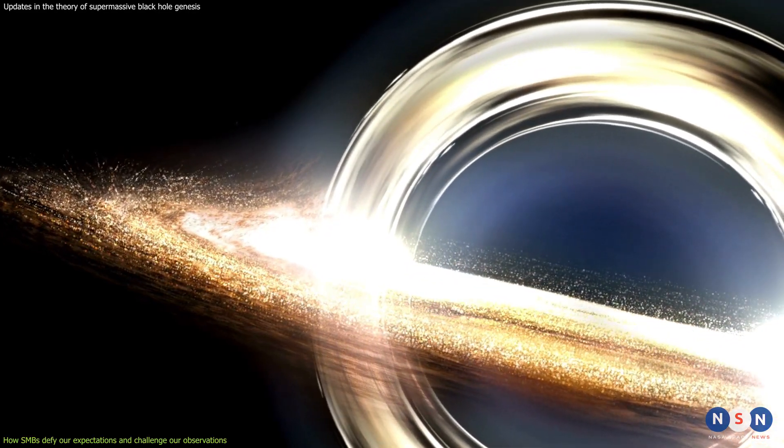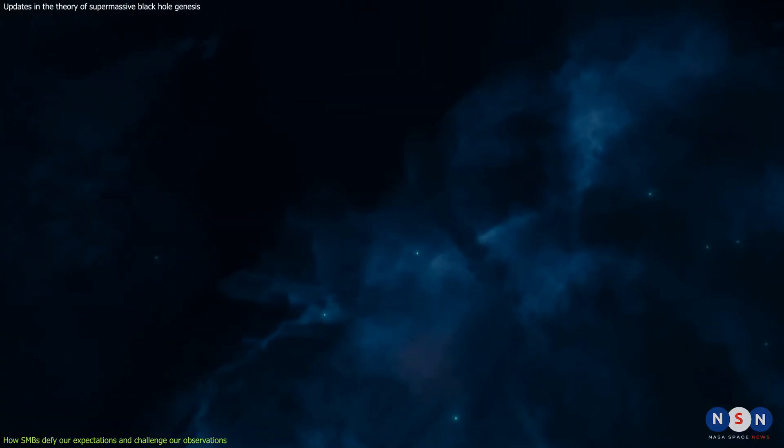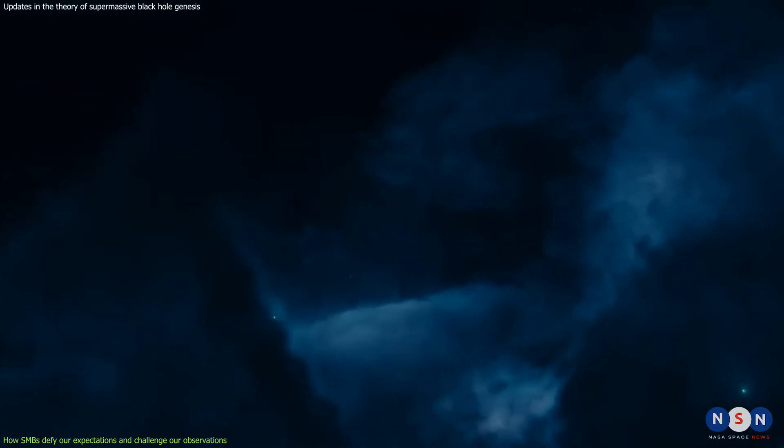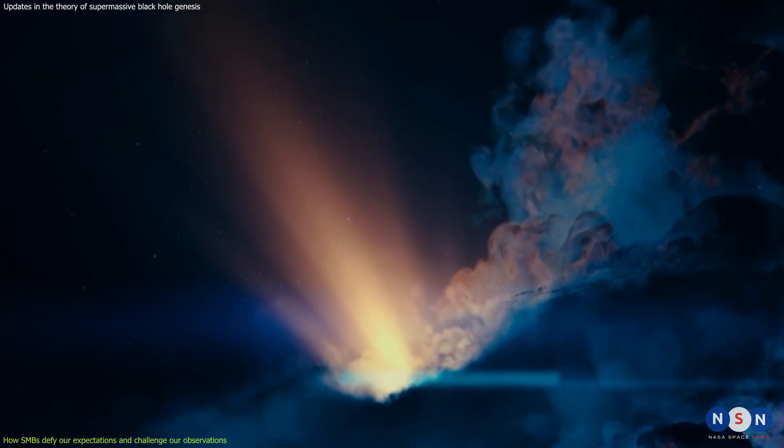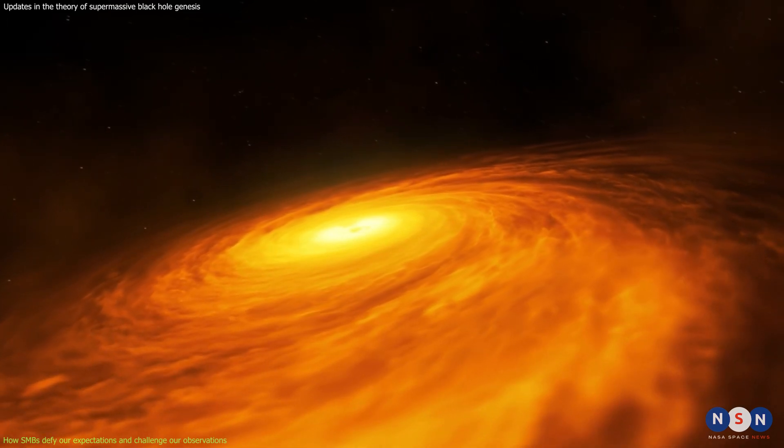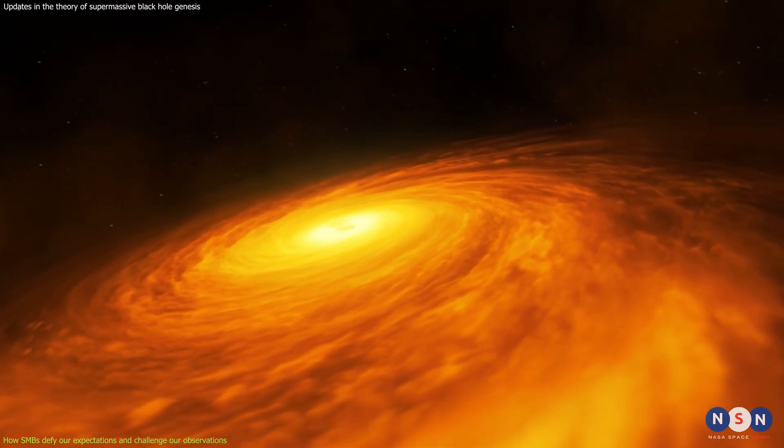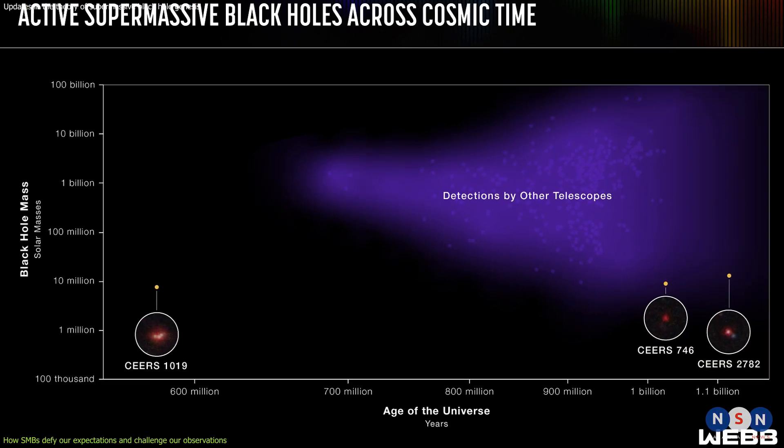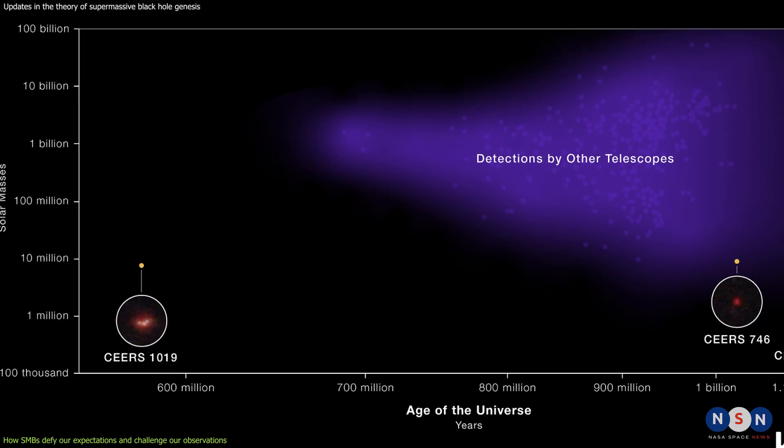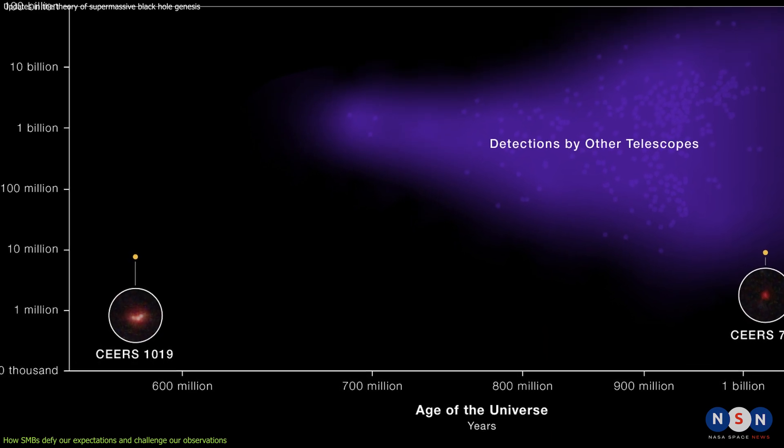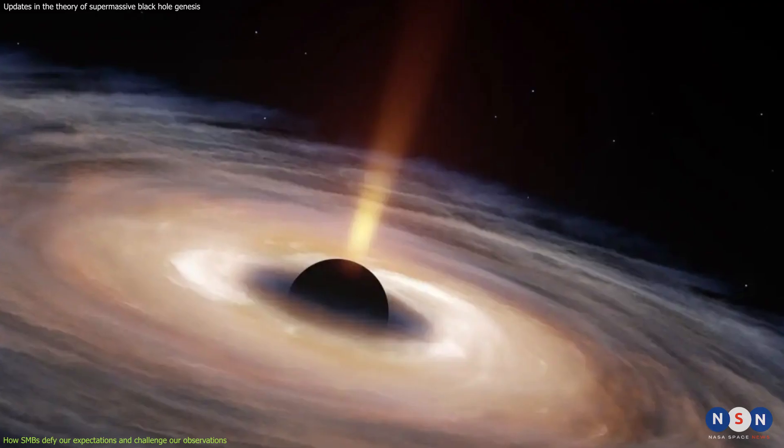But how do these supermassive black holes form? That's one of the biggest mysteries in astrophysics, because there is not enough time in the history of the universe for them to grow from stellar black holes by accretion alone. In fact, some supermassive black holes have been detected as early as 800 million years after the Big Bang, when the universe was only six percent of its current age. How did they get so big so fast?